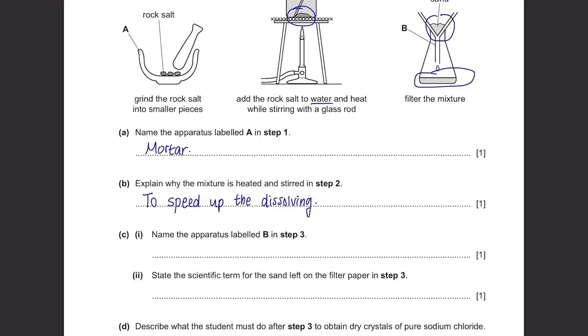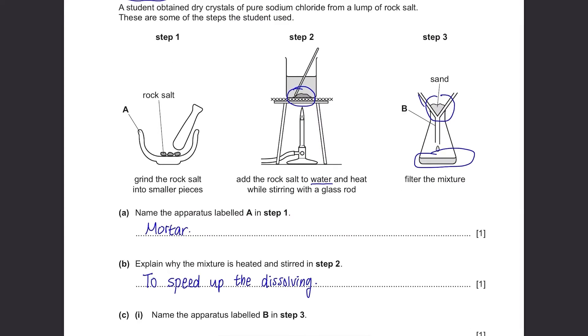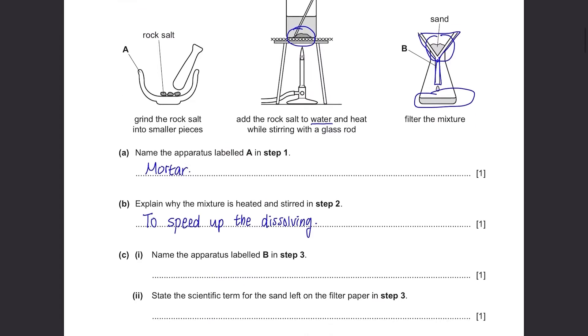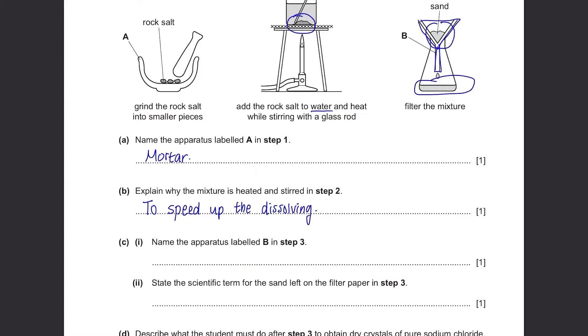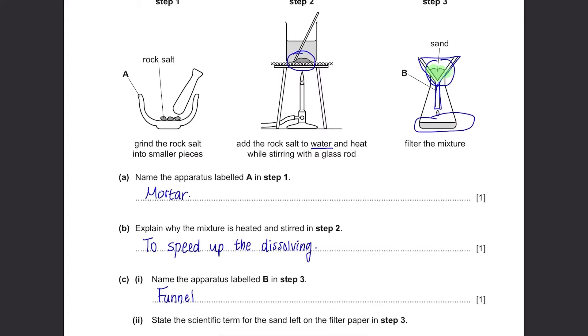Part C: Name the apparatus labeled B in step 3. It's this one looking like a triangle here. And this thick, it's the funnel where you put a filter paper and the residue is left on top. State the scientific term for the sand left on the filter paper in step 3. It's called a residue.